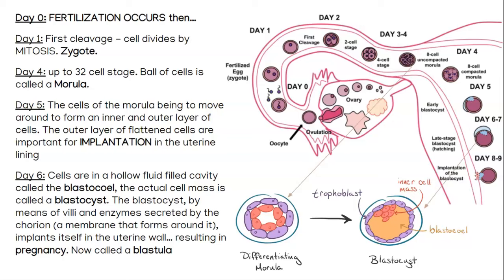Day one is the day after fertilization, and that is when we see our first cleavage, which is essentially just a fancy word for division — to cleave apart or pull apart. Our cell divides via mitosis, so if you look under day one on our diagram, you're going to see it goes from a single cell to a two-cell stage. That two-cell stage will continue to divide and divide, and that is called cleavage. From about day three to day five, once we have about 32 cells around day four, we no longer call it a zygote — we now refer to it as a morula.